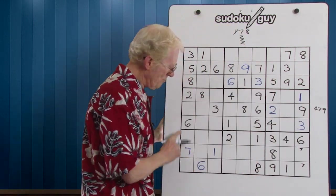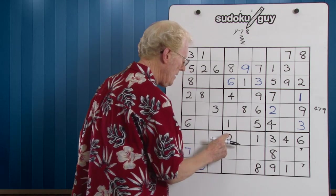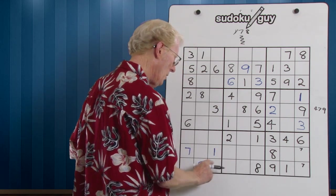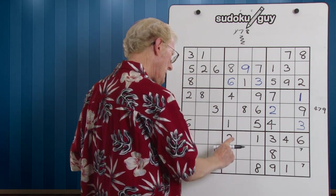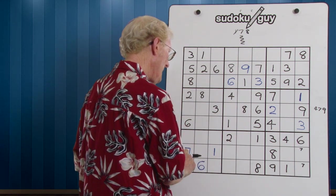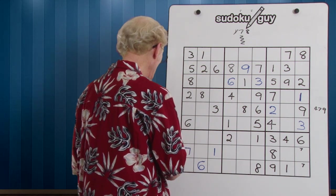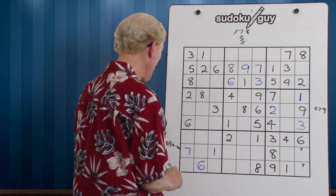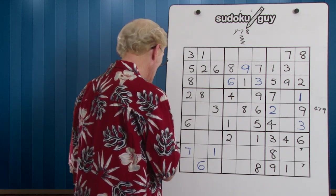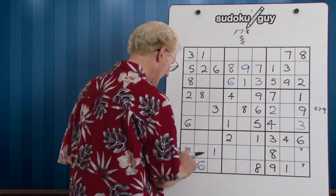Now let's look at this block here. We have three empty cells here, which means that any number along here cannot be in here. Is there any number along here that's already here? I can see a one and a six. So we need to have a two, three, and a four. I'll put them over here with a little wobbly line so I know that it refers to this block. They can't be in here — they have to be down in here.